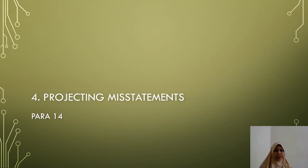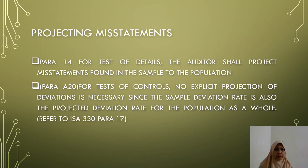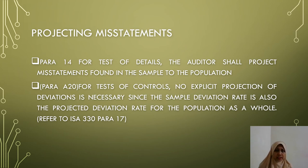The fourth requirement is projecting misstatements. Paragraph 14 states that for test of details, the auditor shall project misstatements found in the sample to the population. Under A20, for test of controls, no explicit projection of deviation is necessary since the sample deviation rate is also the projected deviation rate for the population as a whole. We also need to refer to RSA 330, paragraph 17.